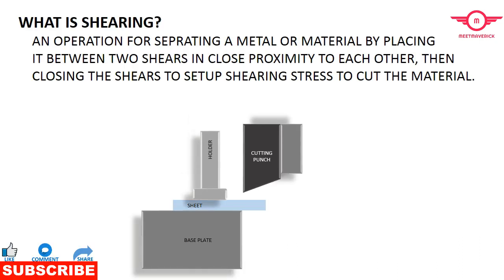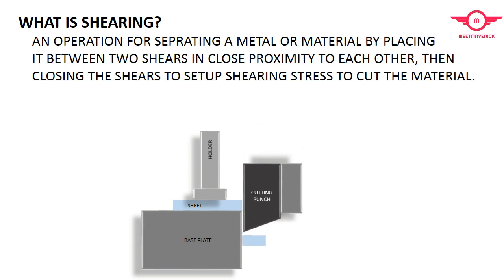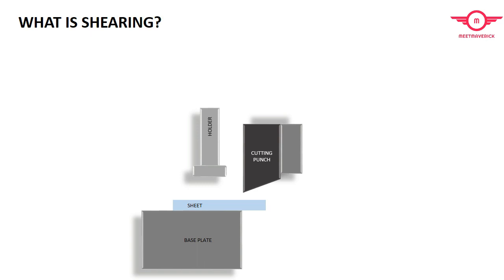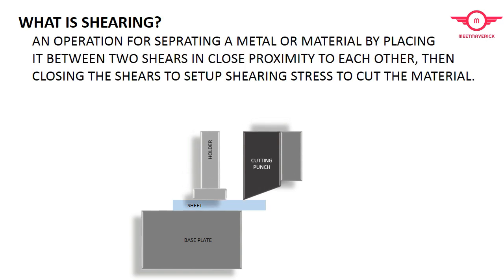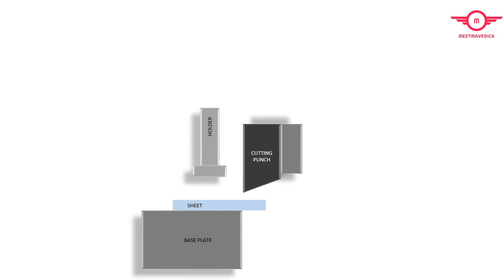Before starting calculation, I want to explain shearing. An operation for separating a metal or material by placing it between two shears in close proximity to each other, then closing the shears to set up shearing stress to cut the material is called shearing.